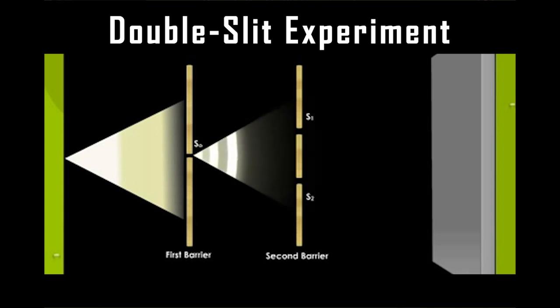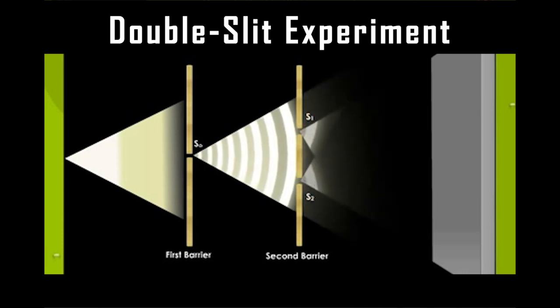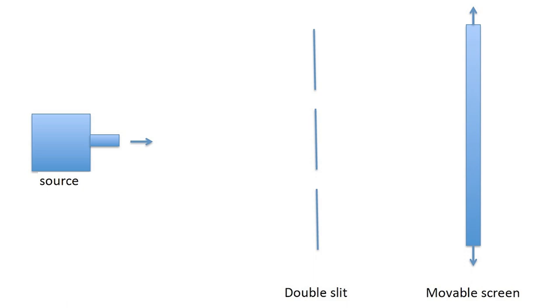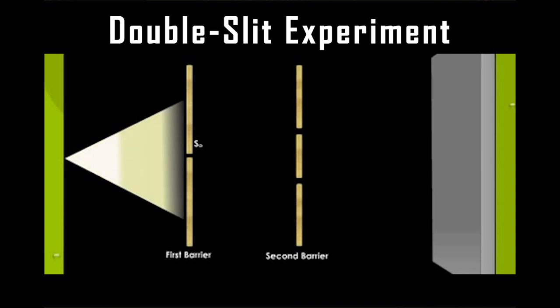To understand the double slit experiment, let's send three different objects to the slits and observe the results together. Let's set up our setup first. Let there be a grey wall at the very back, and an opaque wall that does not allow light to pass directly in front of it. Let's make two slits in the wall that doesn't let in light. Let's put a source behind it, and this source will throw balls, photons and electrons into the slits.